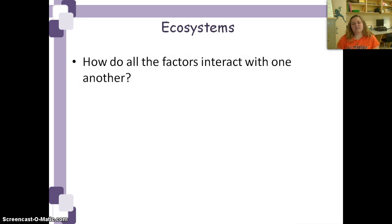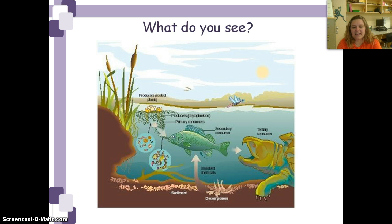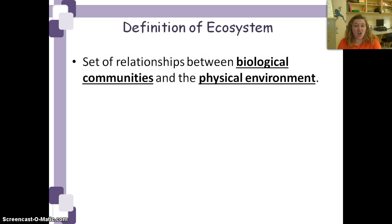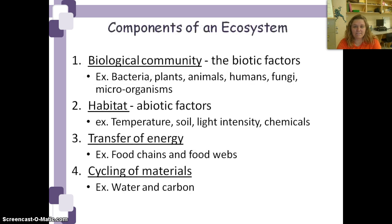Now let's move on and talk about ecosystems — basically how all the factors interact with one another. In this pond we see producers like some rooted plants and phytoplankton, then zooplankton as a primary consumer, a secondary consumer, and a tertiary consumer, plus some decomposers. An ecosystem is all the living and non-living stuff in an area. In an ecosystem we have a community — all the biotic factors — and the habitat, all the abiotic factors. There's always a transfer of energy and a cycling of materials.